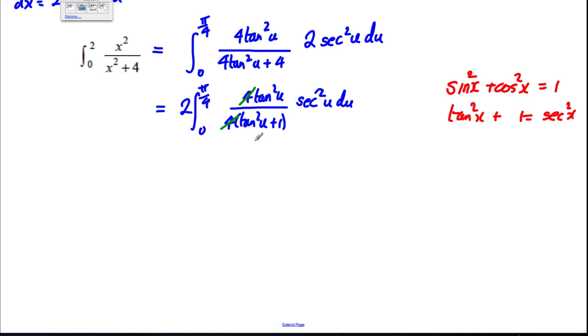So, I can replace tan²(u) plus one by sec²(u). So, this is two, the integral between zero and π by four of tan²(u) over sec²(u) and this sec²(u) here du. Clearly, the sec²(u)'s cancel.